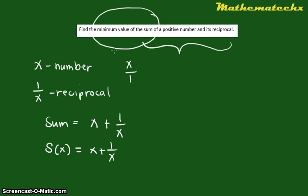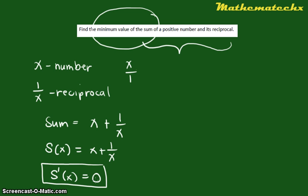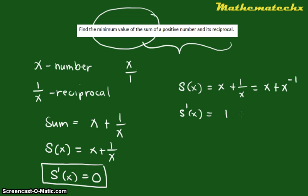How do we find a minimum or maximum value? We find it when the derivative of a given function is 0. In this case, S(x) has derivative S'(x). So we get the derivative of S(x) and set it to 0. If S(x) = x + 1/x, which is equivalent to x + x^(-1), then the derivative S'(x) = 1 minus x^(-2), which is 1 minus 1 over x squared.